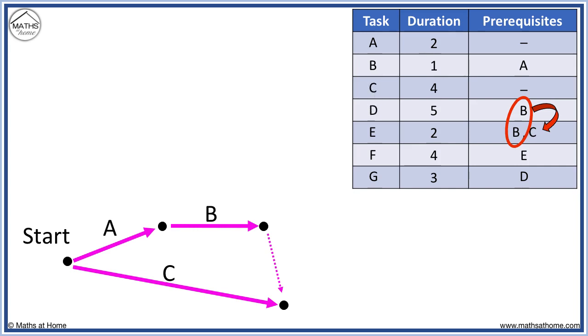Task D has just task B as a prerequisite. So it comes out of task B at the top node. However, task E requires both task B and C so it comes out of the end of the dummy link on the bottom node. This way B and C both feed into this task.